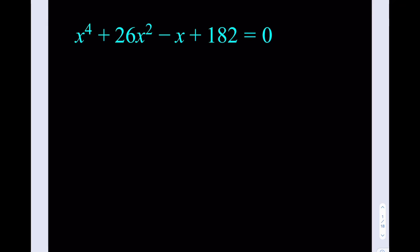Notice one thing about this equation which is particularly important: we do not have an x cubed term. So this could be considered a reduced quartic, which is what we have to do if we're going to solve this equation by using the formula. When I show you the second method, you'll understand why it's important not to have the cubic term in our equation.